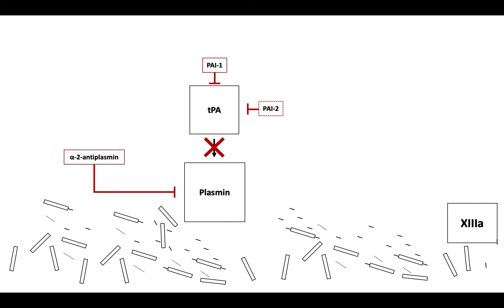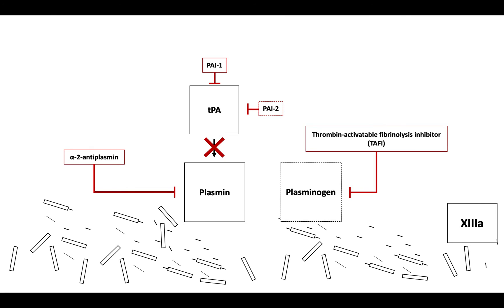The final regulator of fibrinolysis is thrombin-activatable fibrinolysis inhibitor, or TAFI. TAFI blocks fibrinolysis by diminishing the incorporation and activation of plasminogen. This decreases plasminogen conversion, leading to delayed clot lysis.